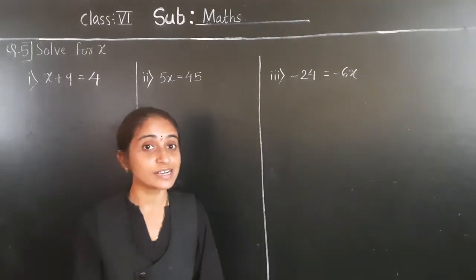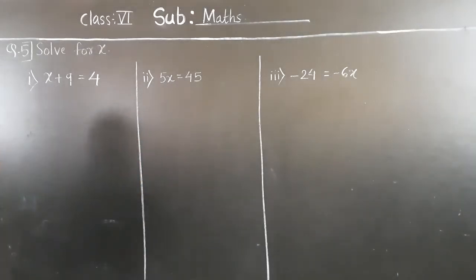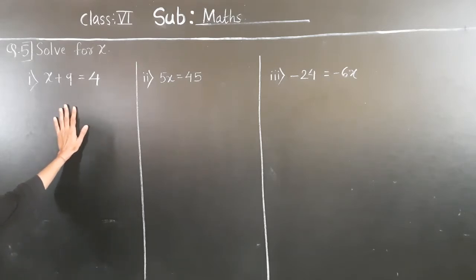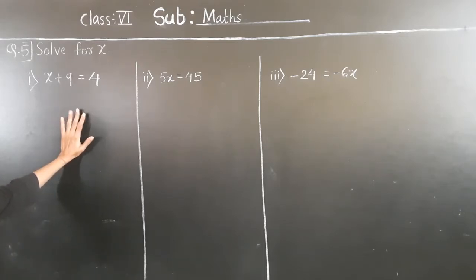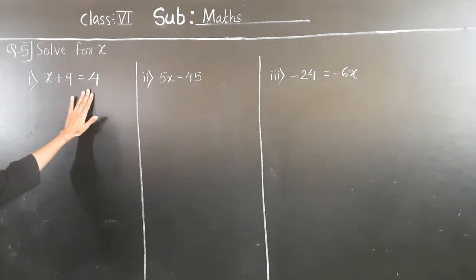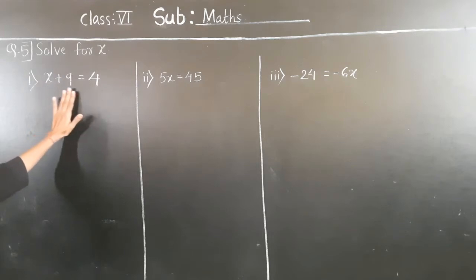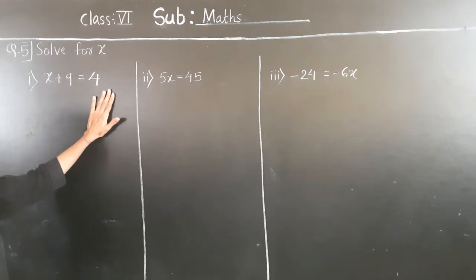Good morning students, let's solve exercise 7.5, question number 5: solve for x. We have to find the value of x. The given equation is x plus 9 is equal to 4.